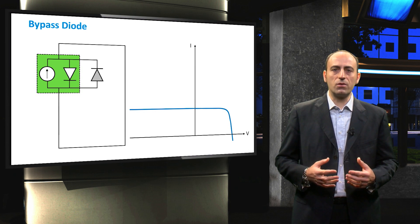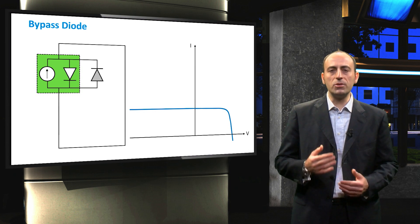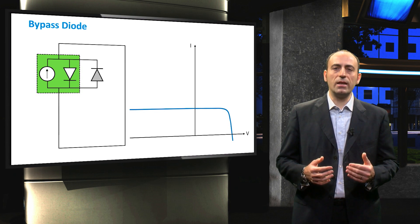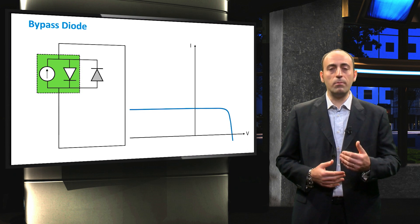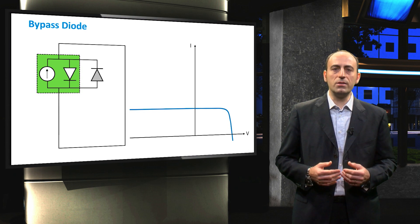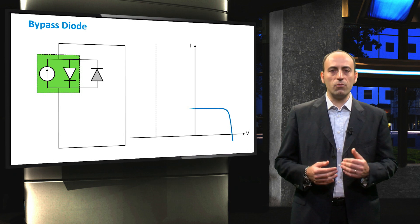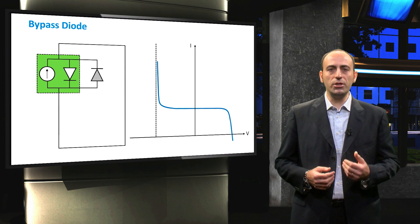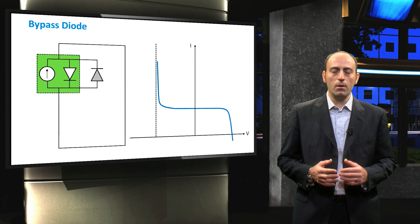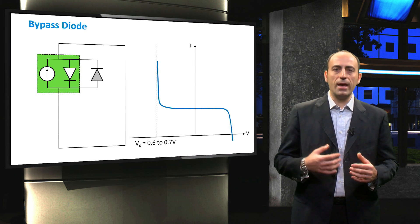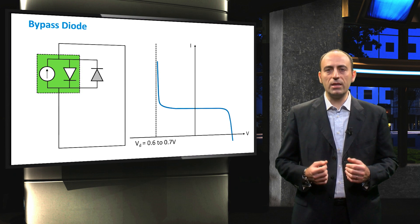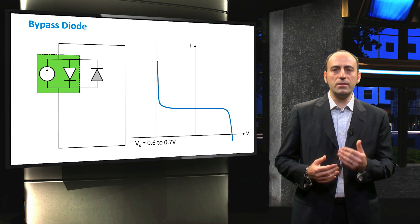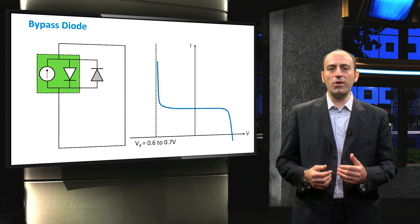Such a diode is connected in parallel but with opposite polarity with respect to the cell. This means that in normal operation, each solar cell is forward biased, while the bypass diode is reverse biased. In the graph, it is reported how the current voltage characteristic changes when introducing the bypass diode. Between 0.6 and 0.7V in negative bias, the bypass diode is activated and it will raise immediately the current, avoiding the breakdown of the cell.